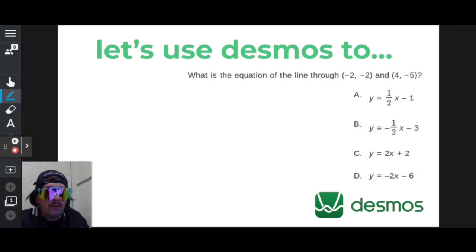Hey everybody! Let's use Desmos to find the equation of a line that goes through negative 2, negative 2, and 4, negative 5. I wonder how it's done.